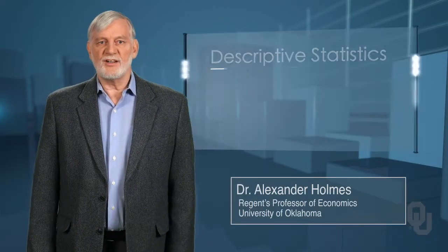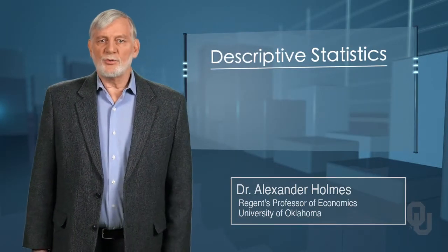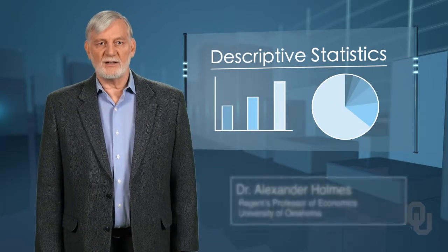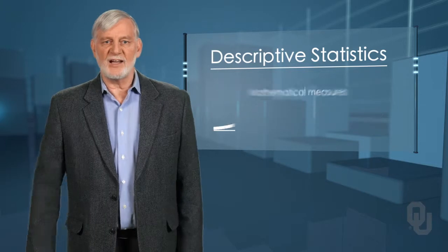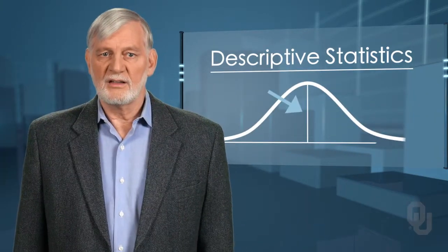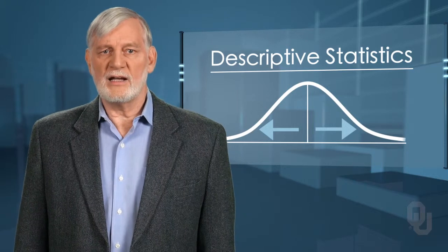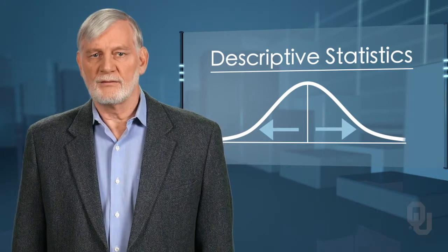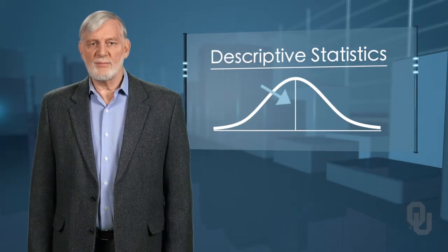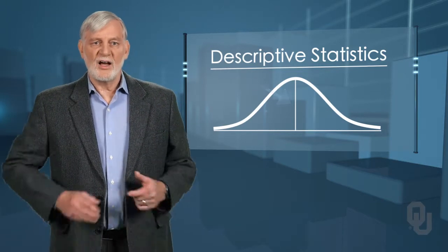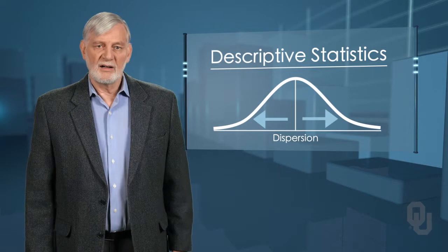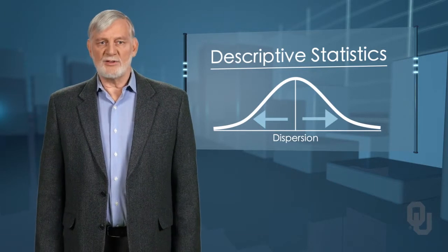Unit 2 is aptly titled Descriptive Statistics, but it moves us well beyond simple pictures of data to mathematical measures of the two most important features of any data set: its center and its spreadness. The center of the data is a measure of the average value, and the spreadness gives us a sense of how dispersed the data are — that is, how alike each observation is.